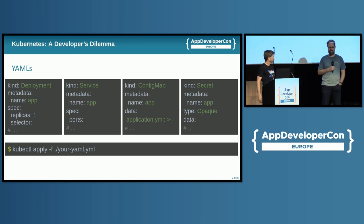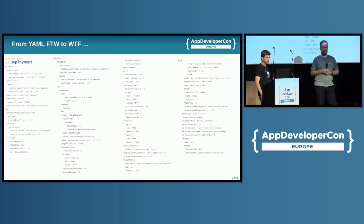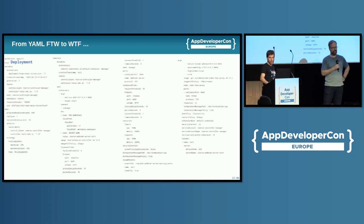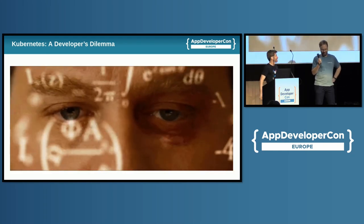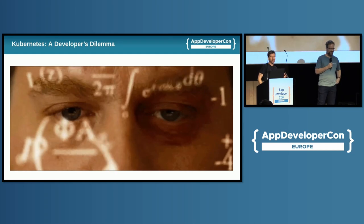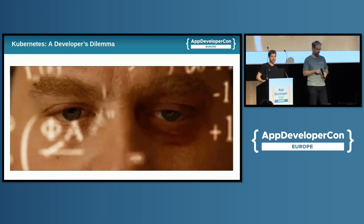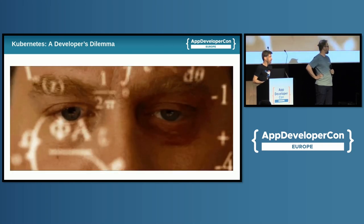In theory, everything looks nice, but as your application grows in complexity and gets older, so do these files — they become longer and larger in quantity. You get to deal with more and more files which get more and more complex. As an application developer, and we've been hearing about this complexity all morning, what we want is tools that will actually help us deal with all of this complexity.